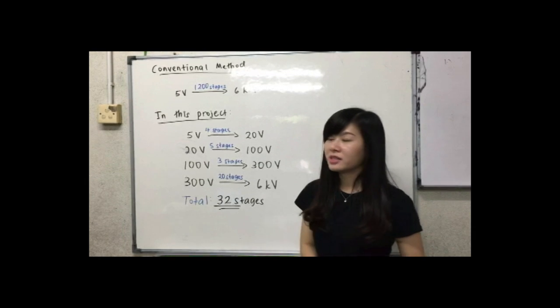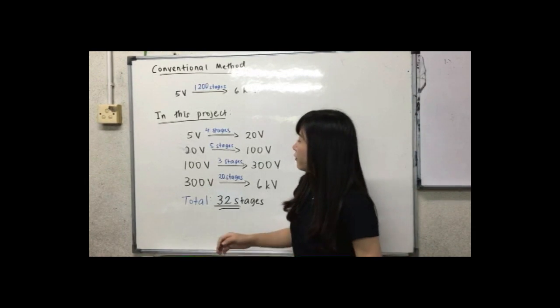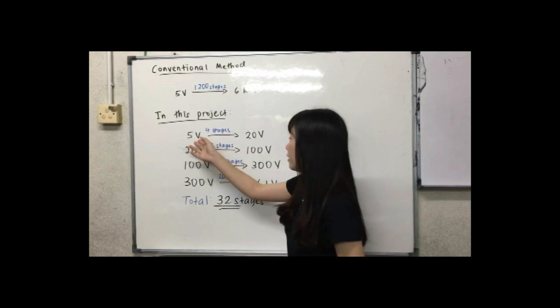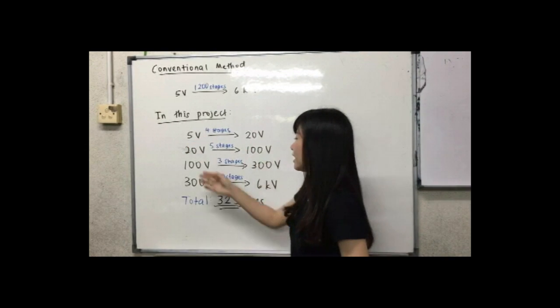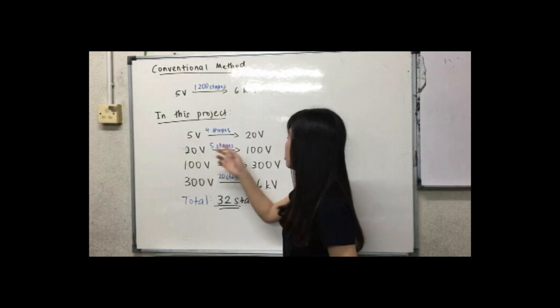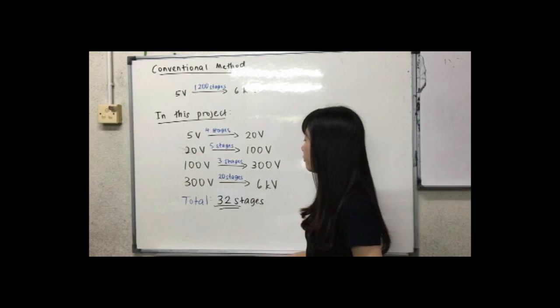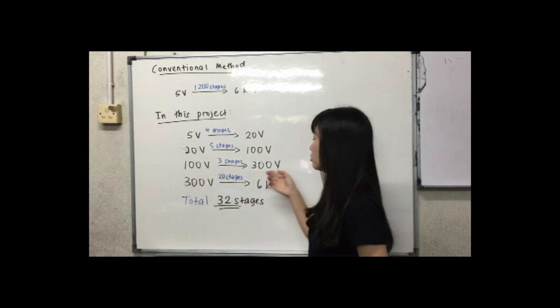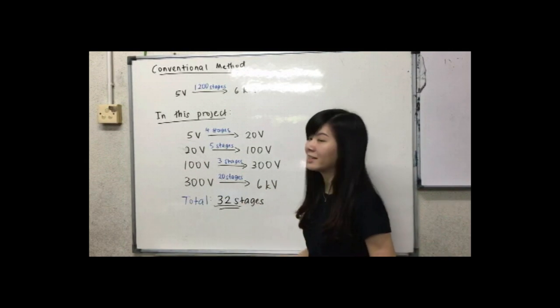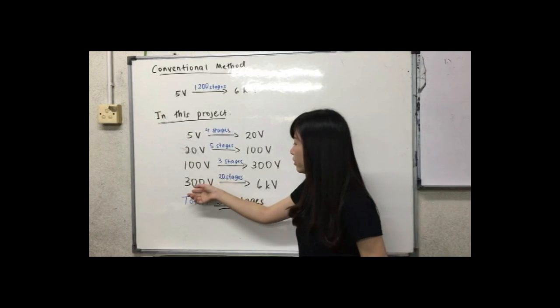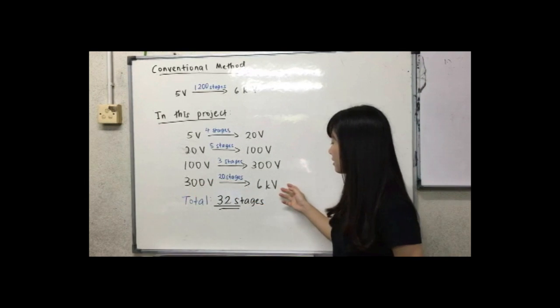I will divide the voltage multiplier into several levels. For the first level, it consists of 4 stages which is from 5V to 20V. The second level will consist of 5 stages which is from 20V to 100V. The third level will require 3 stages which is from 100V to 300V.